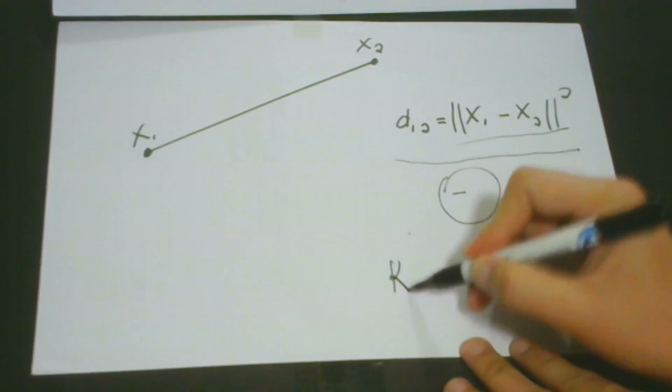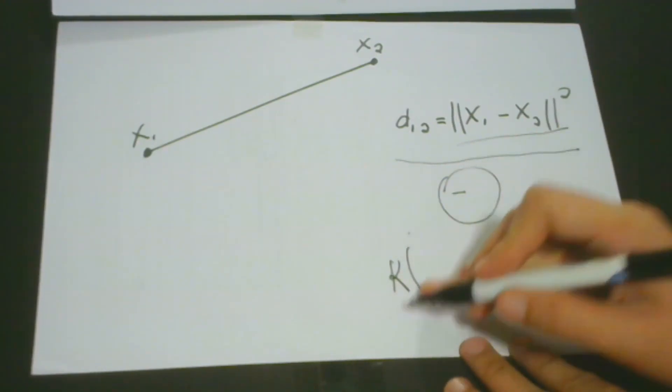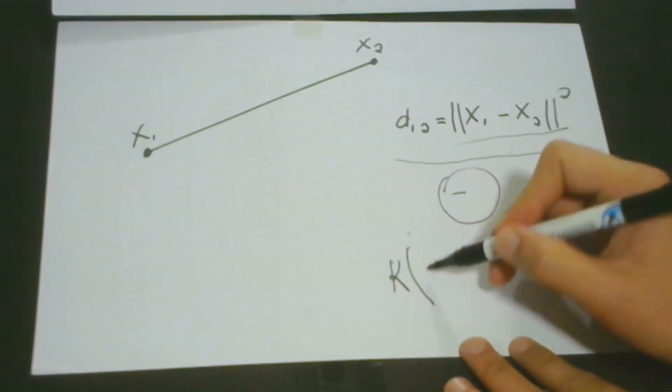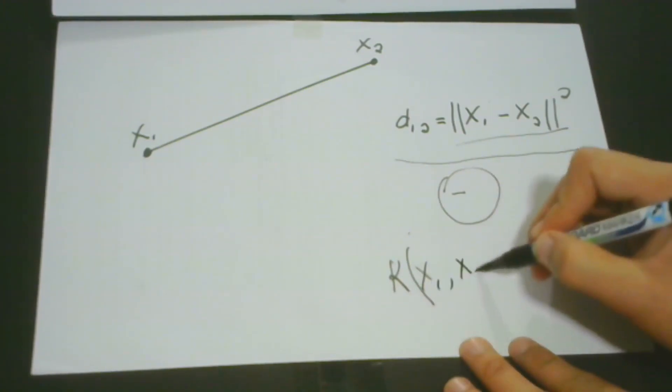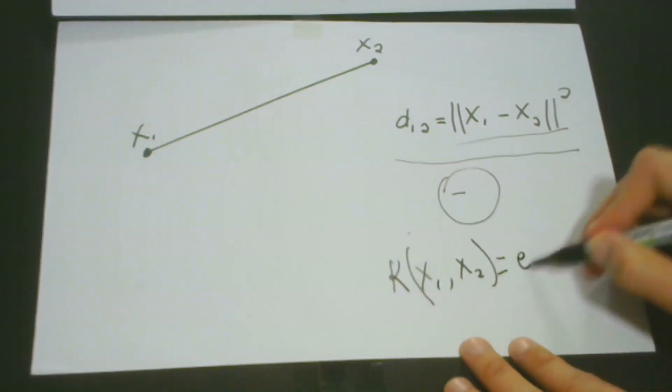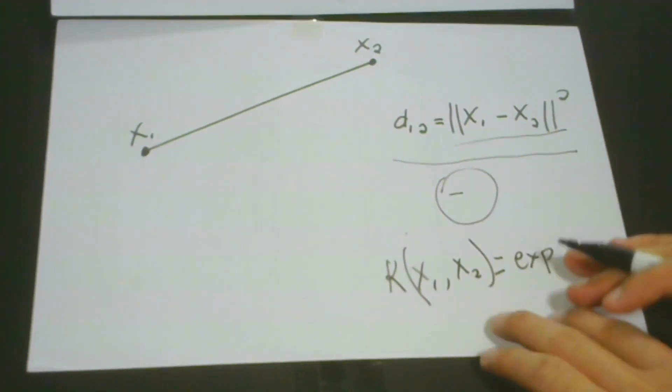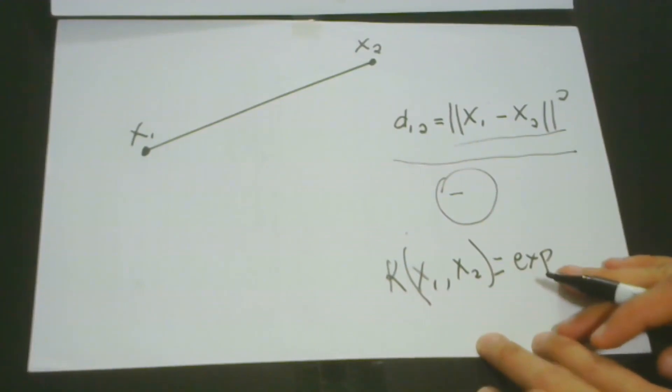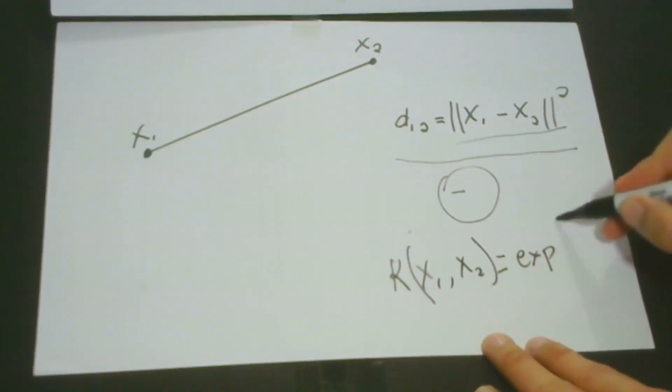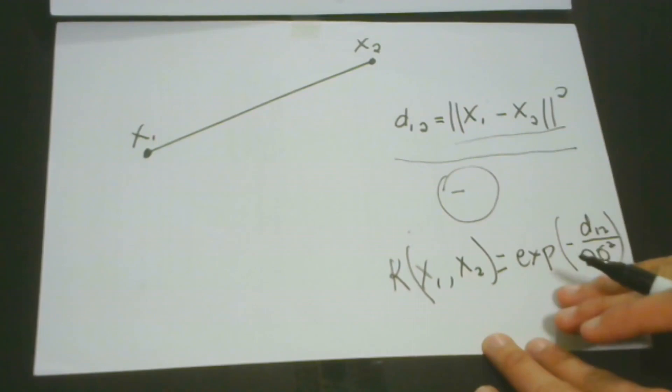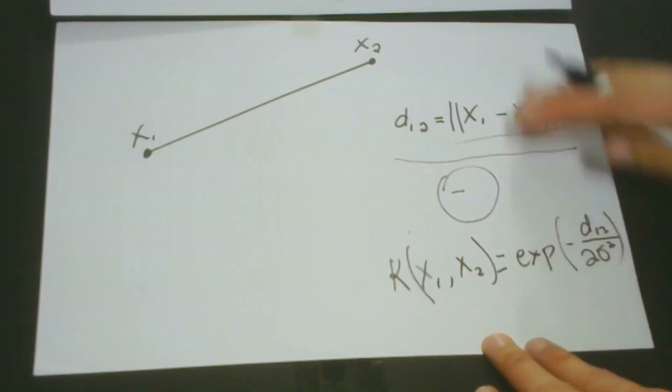So we will have K, which means kernel. Then we have x1, x2, then is equal to the exponential. So exponential here is actually a constant. And of course, you know that value of this exponential. And we will have minus, we have d1,2, then we have two variance squared. So this represents the kernel equation of this distance.